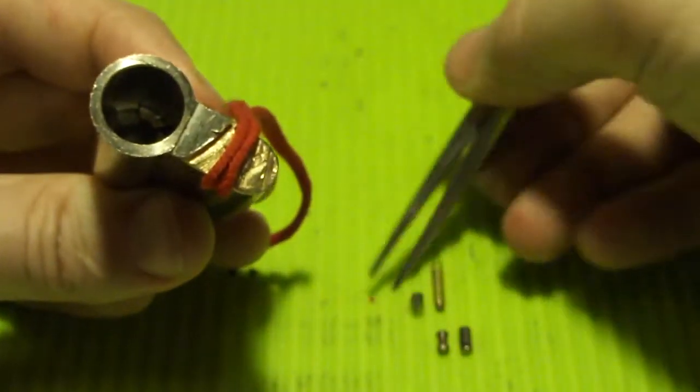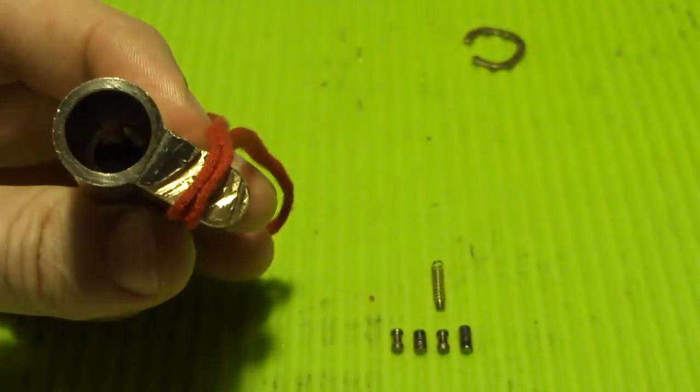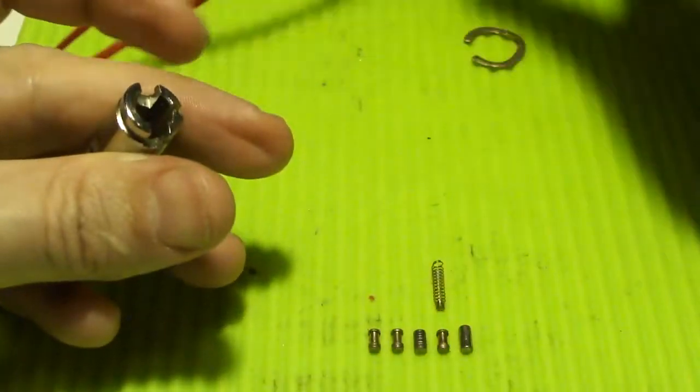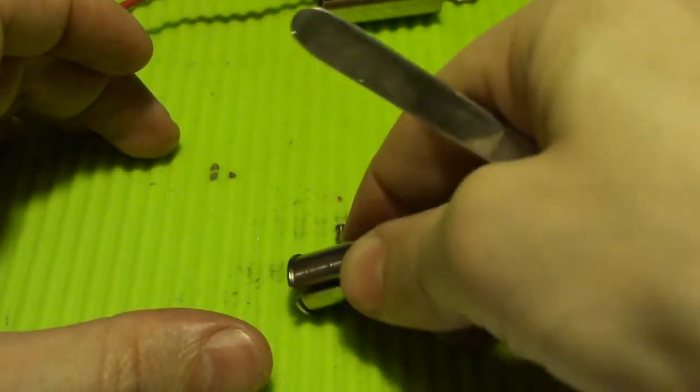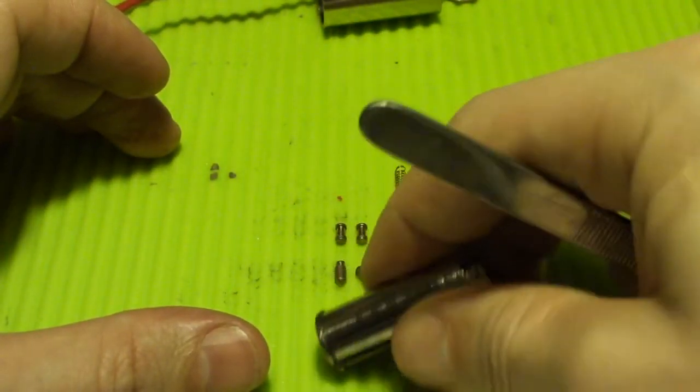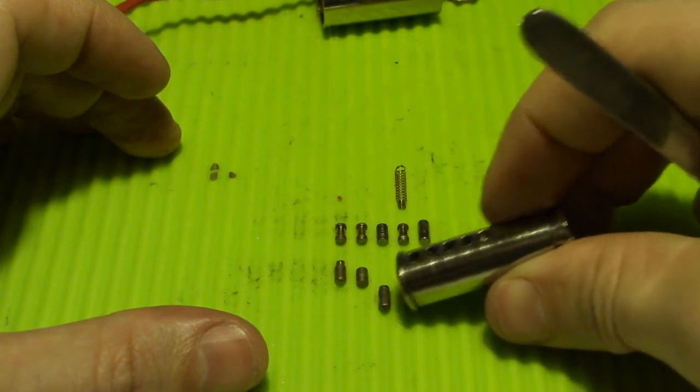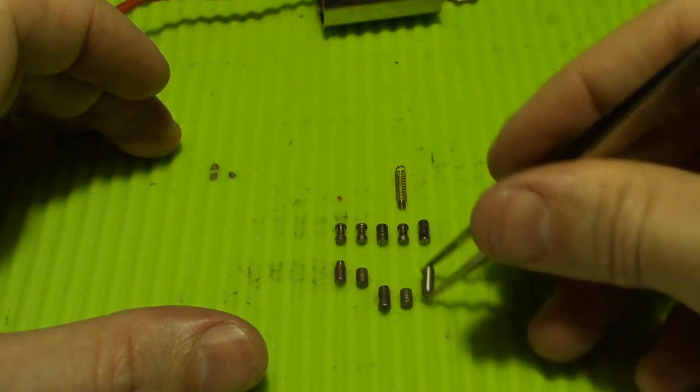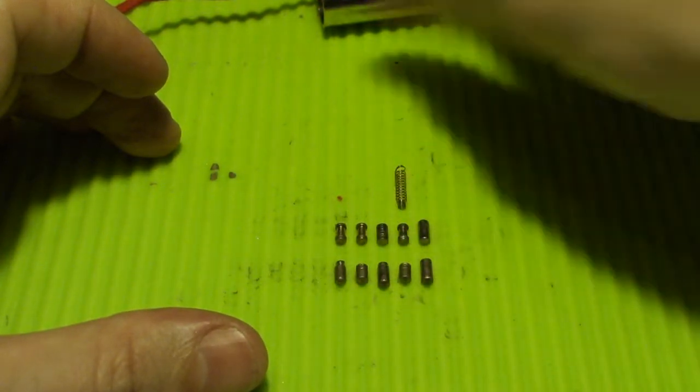Three is a serrated. Two is another spool. And number one is also a spool. Key pins... all right.